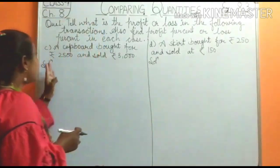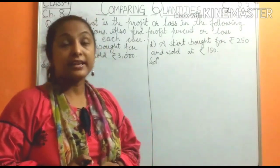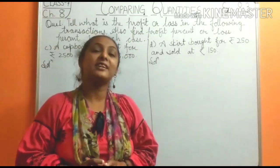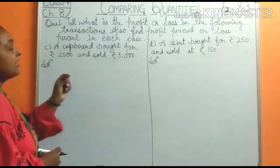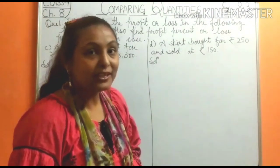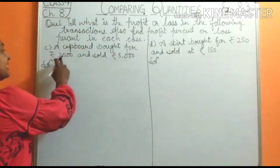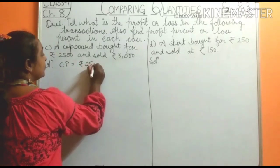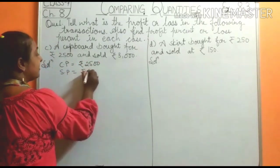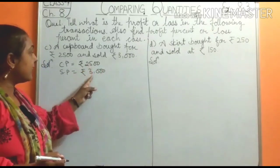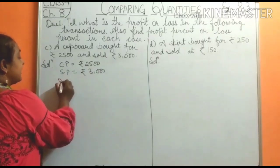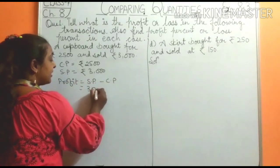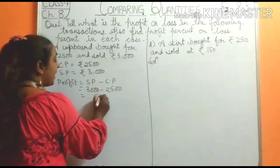Let's come to Part C. In Part C, CP equals Rs. 2,500 and SP equals Rs. 3,000. From here we can see that SP is greater than CP, so there is a profit. Profit equals SP minus CP, which is 3,000 minus 2,500, that is Rs. 500. So I have a profit of Rs. 500.